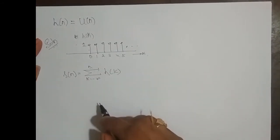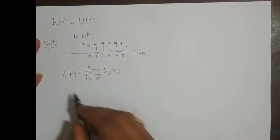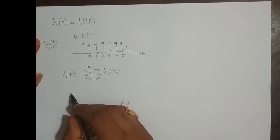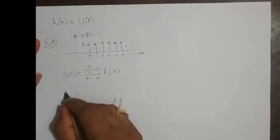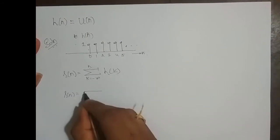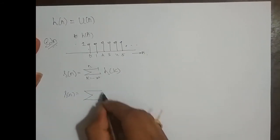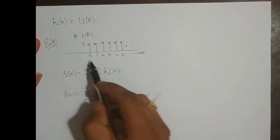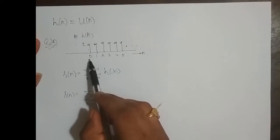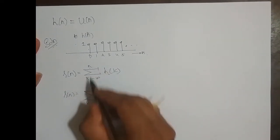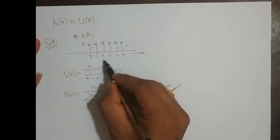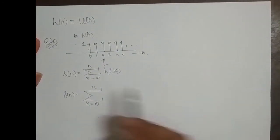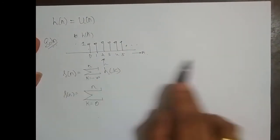That is why we call it a running sum. So we will just take up this problem. S of n is equal to summation, where k is equal to — our impulse response starts from 0, right? So it is 0 to n, and n is the slider here.